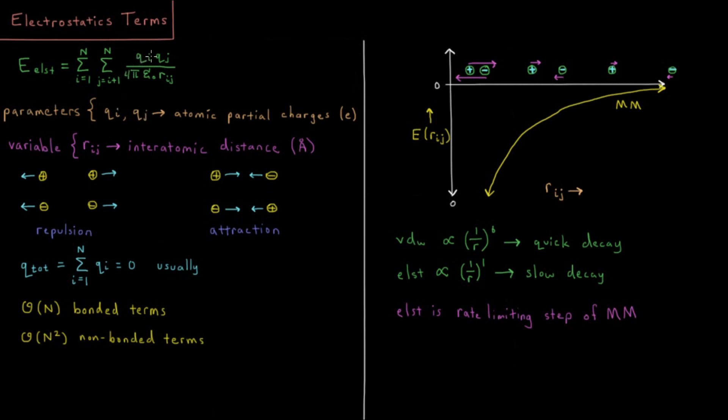Every single atom has its own atomic partial charge parameter. The variable here is the interatomic distance, which can change based off the coordinates of our two atoms.